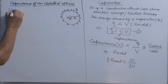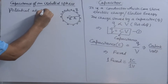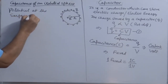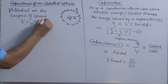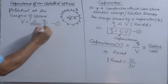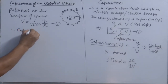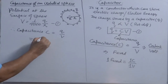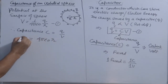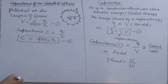Let's calculate the potential at the surface of the sphere. That will be equal to 1 over 4π epsilon-naught times Q over R, because we have concentrated the charge at the center of the sphere. Therefore, capacitance C equals Q over V, which comes out to 4π epsilon-naught times R. That is the capacitance of an isolated charged sphere.